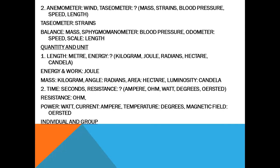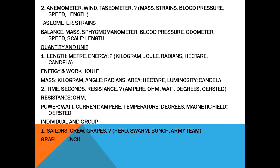Individual and group. The group of grapes is called bunch. The group of cattle is called herd. The group of bees is called swarm. The group of soldiers is called army. The group of players is called team. The group of ministers is called council.